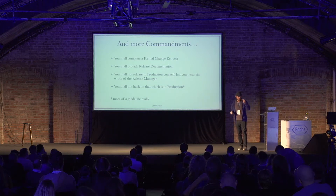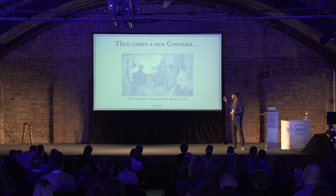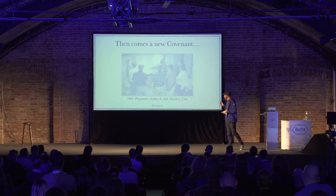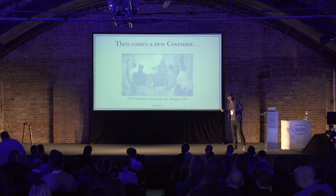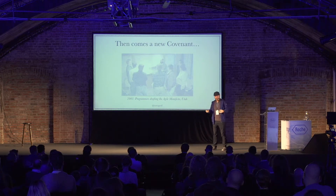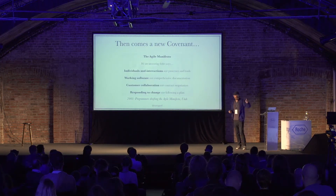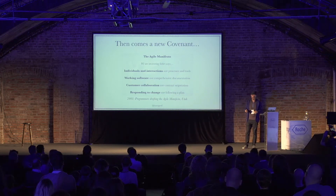Then what happened in about 2001 — the New Testament. This is a photo of 17 middle-aged white guys standing around a screen. This was in Utah at a place called Snowbird, a skiing resort. This bunch of guys all came together because they all had something in common: they were all successful software people, all kind of getting work done. The guy that brought them all together, Robert Martin, said 'we've got a lot more in common than we have different.' They all had their different brands, but basically there were things they had in common. They spent a weekend thinking about this and drafted the famous Agile Manifesto.